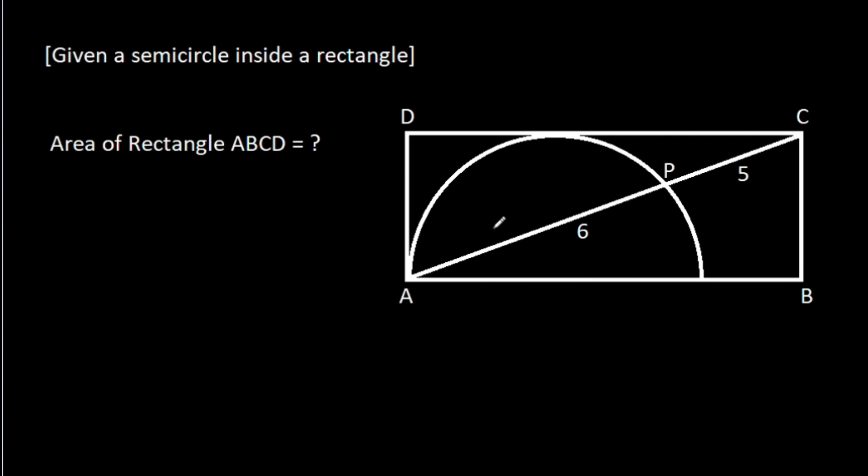In this video, we have been given a semicircle inside a rectangle. AP is 6, CP is 5, and we have to find the area of rectangle ABCD. It is a rectangle.